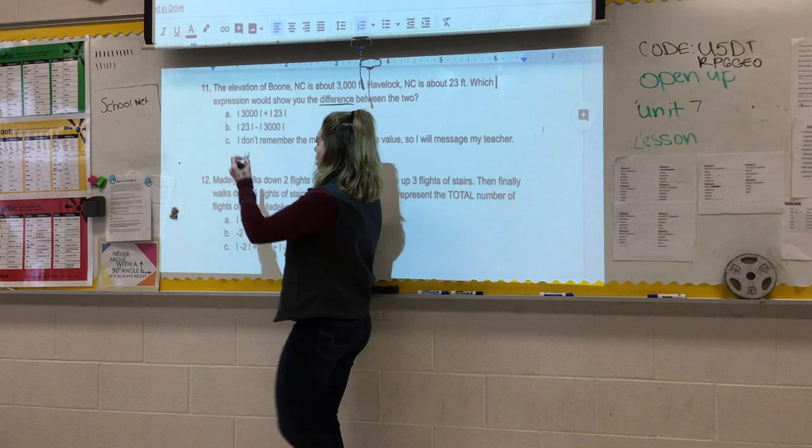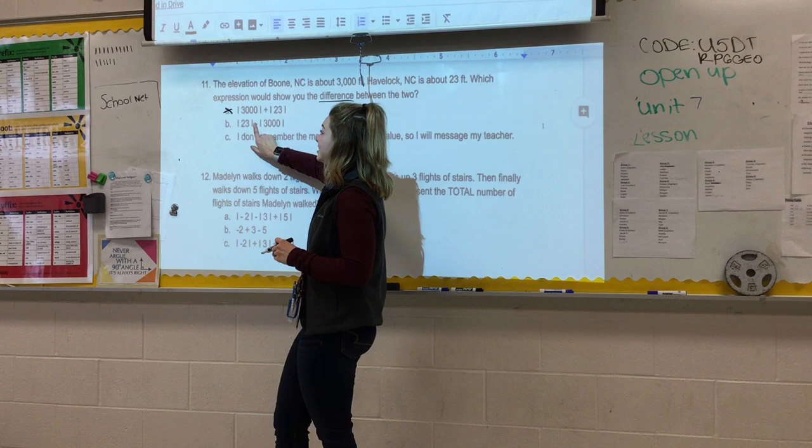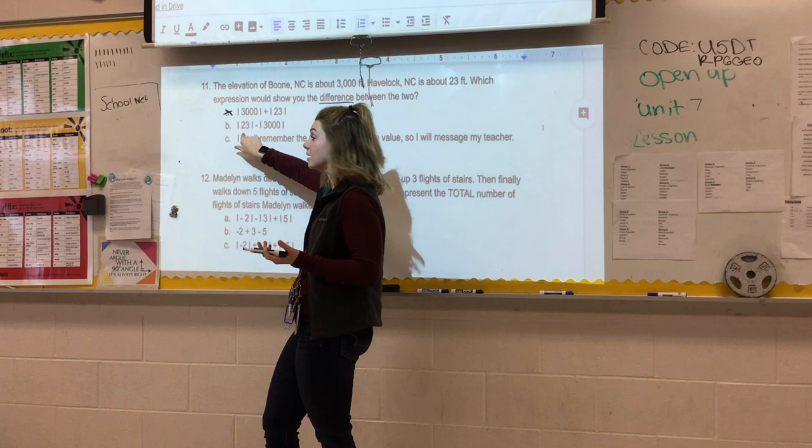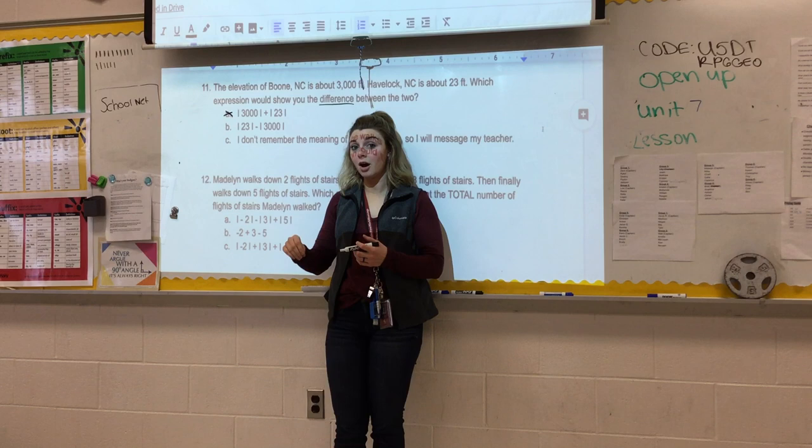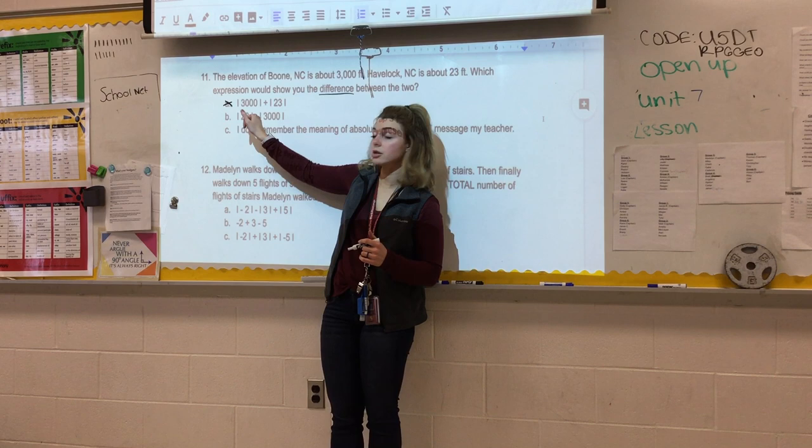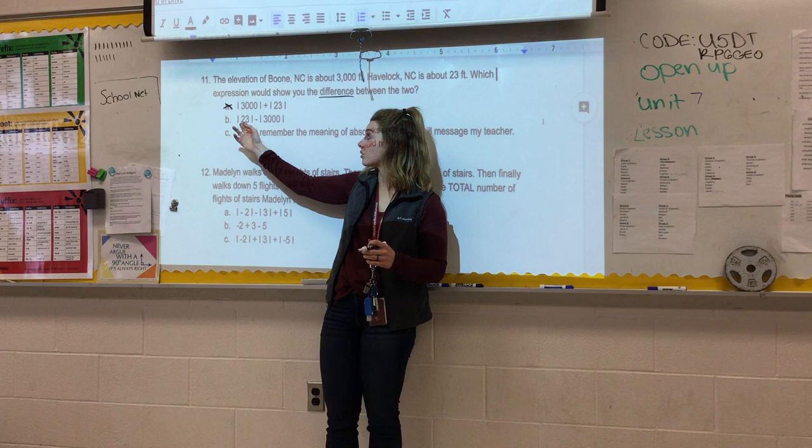This is telling us the difference between the absolute value of positive 23 and the absolute value of 3,000. Even though this looks like 23 minus 3,000, that's going to be a crazy negative number. It's not, because it's absolute value, which means you take away the sign. Absolute value is never negative. So that is the true difference between 23 and 3,000. So B would be our answer.